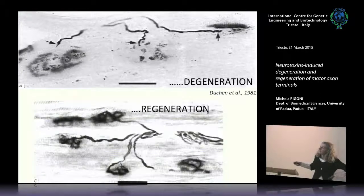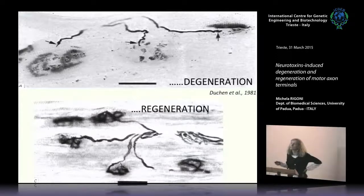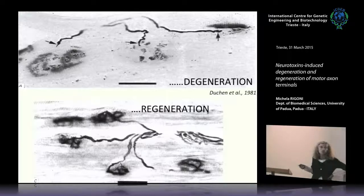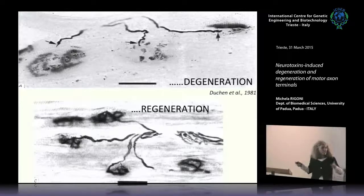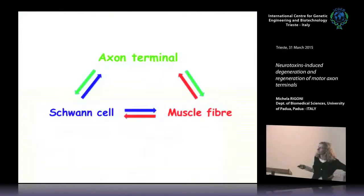Another striking feature is that with time there is a complete regeneration of the nerve terminal, both in mice and in humans. This observation made us think that these toxins could be useful tools to induce an acute and localized nerve degeneration, and then study in a short time window what happens during regeneration. So these toxins can be instruments to study the degeneration and regeneration processes.